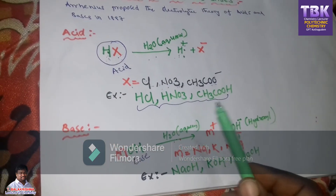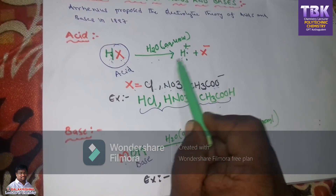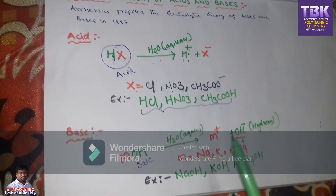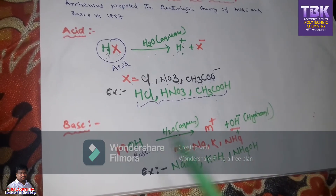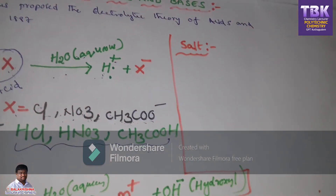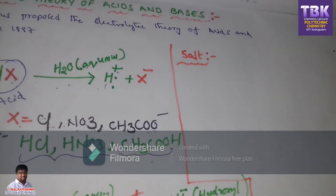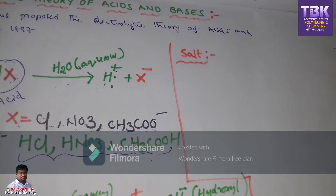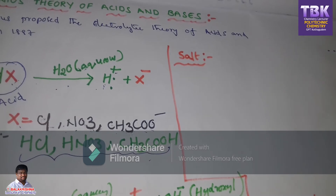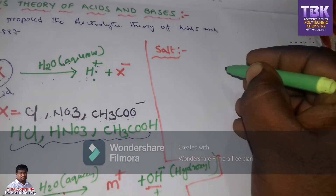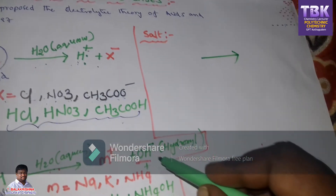According to the Arrhenius theory: the chemical substance which ionizes into water and produces H+ ions is called an acid; the chemical substance which produces OH minus ions in aqueous solution is called a base. A substance which can neither give H+ ions nor OH minus ions in aqueous solution is the next topic — salt.